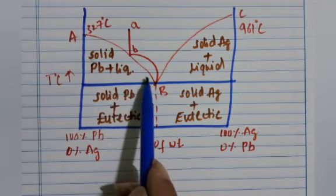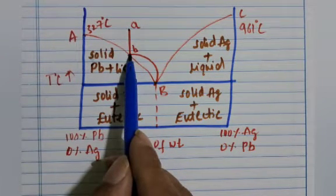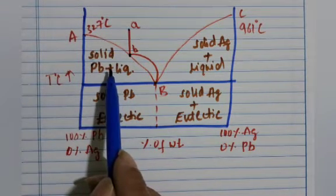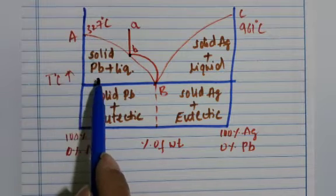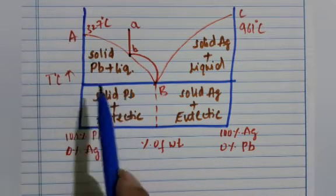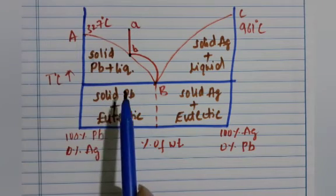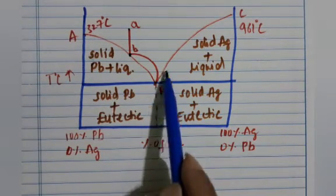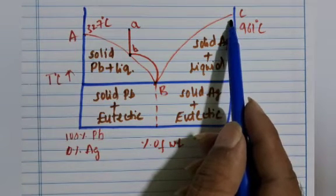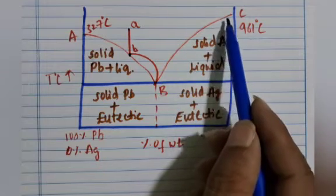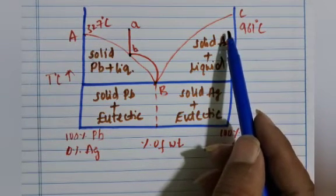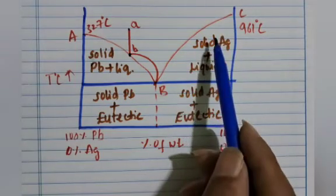As soon as point B is reached, lead begins to crystallize and the solution contains a relatively higher percentage of silver. Further cooling shifts the system along the line BC. Lead continuously separates out, and the melt continues to be rich in silver until point C is reached.